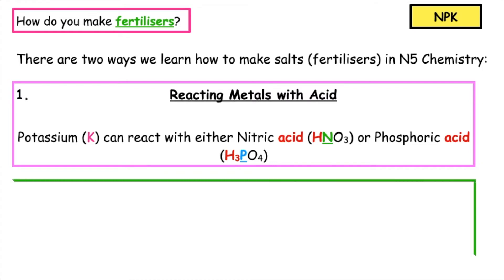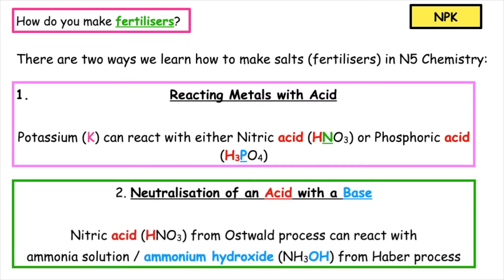The second method we could use is the neutralisation of an acid with a base. We can take nitric acid from the Oswald process and react that with ammonia solution, which is more commonly known as ammonium hydroxide from the Haber process. These are the two methods we're going to look at to produce different salts, which are known as fertilisers.